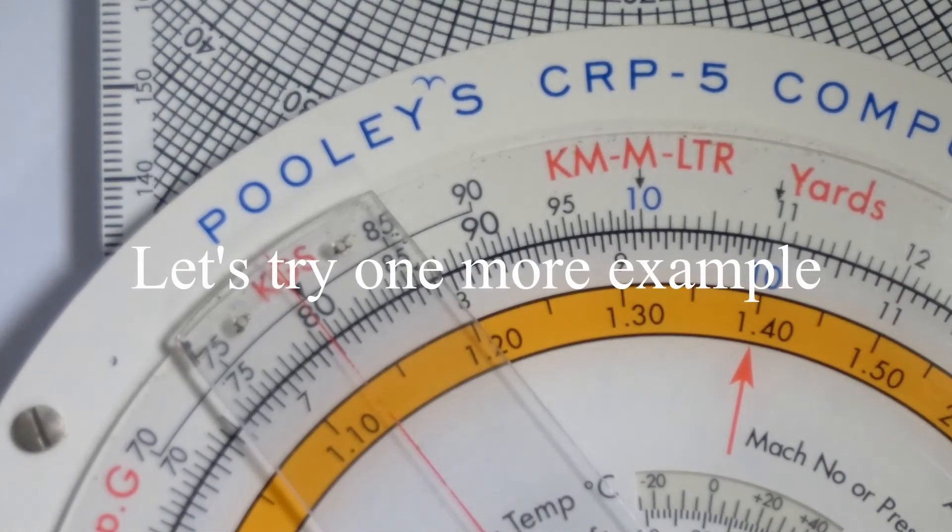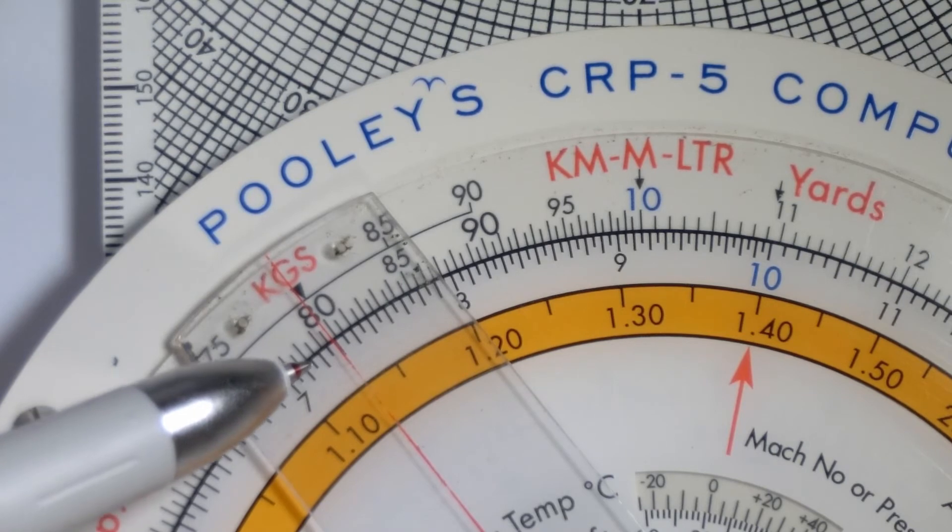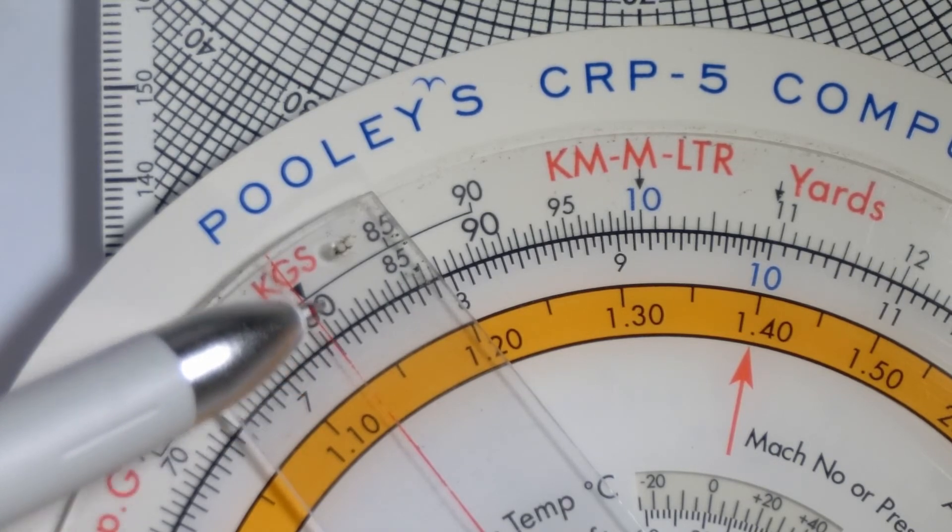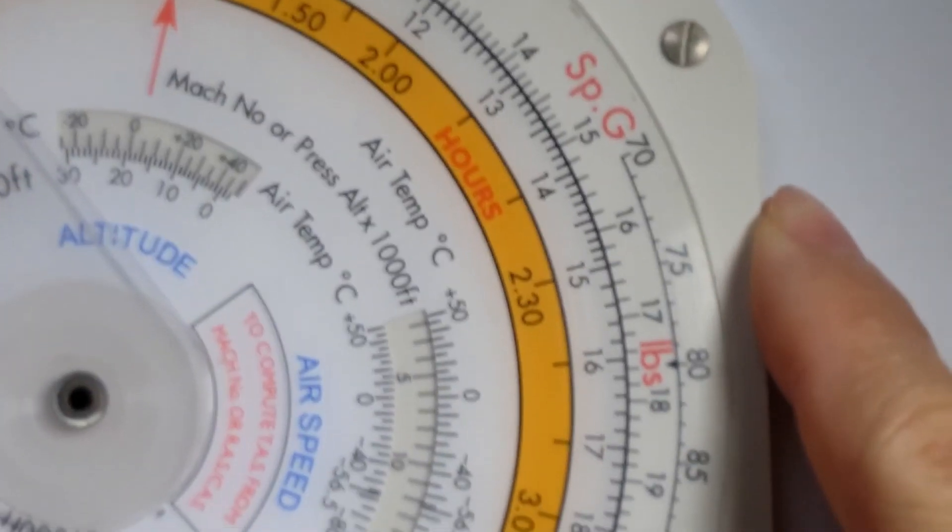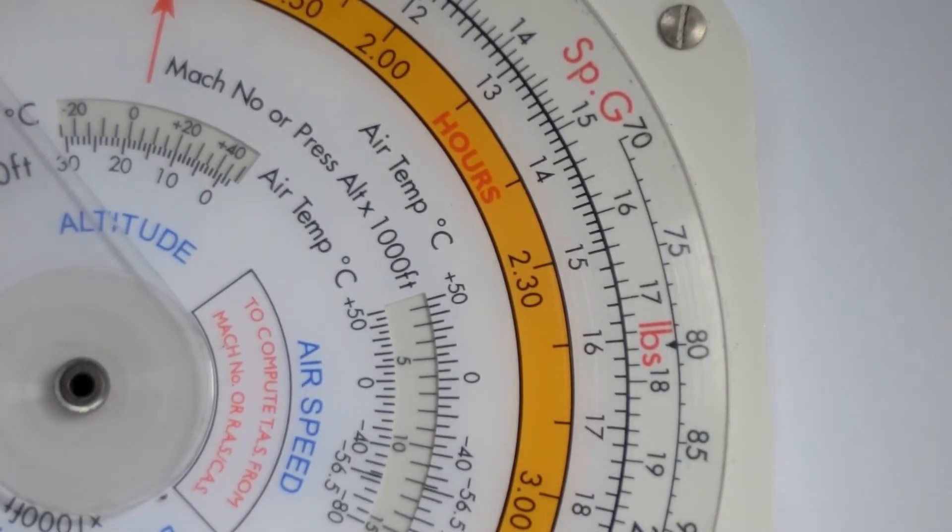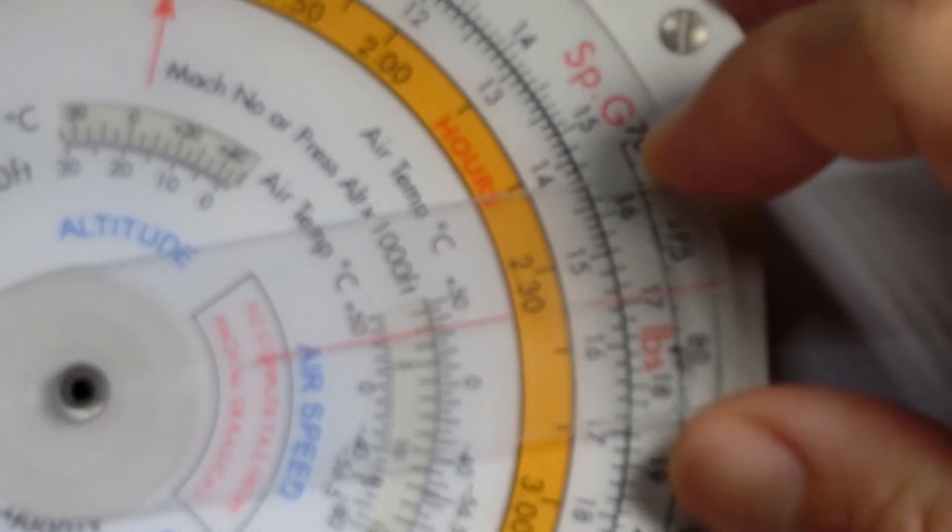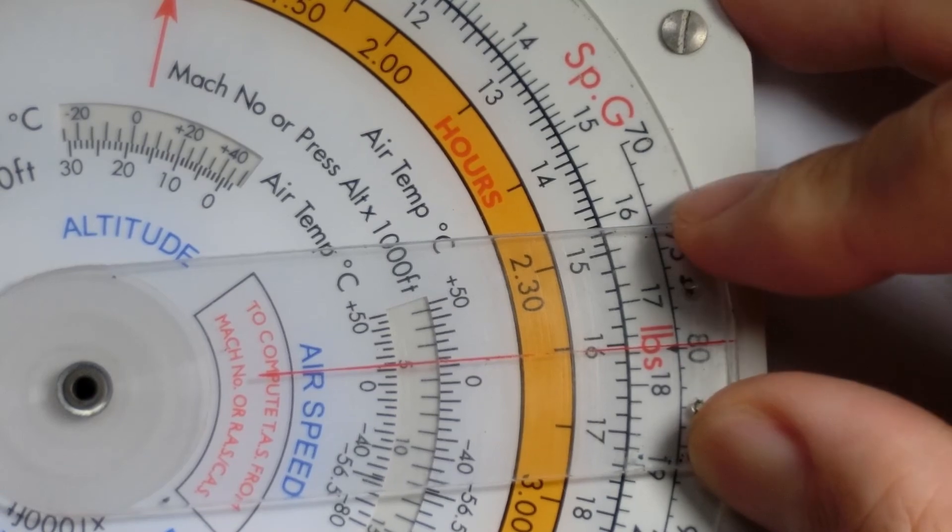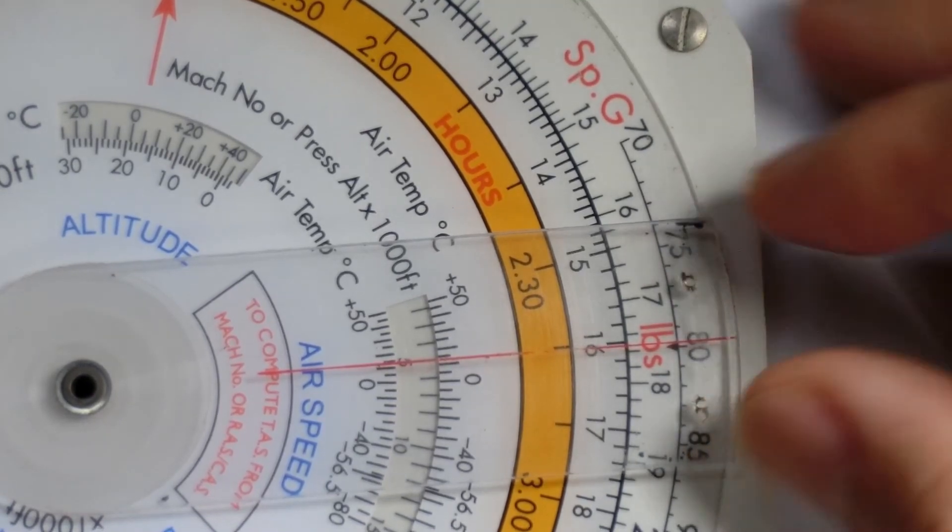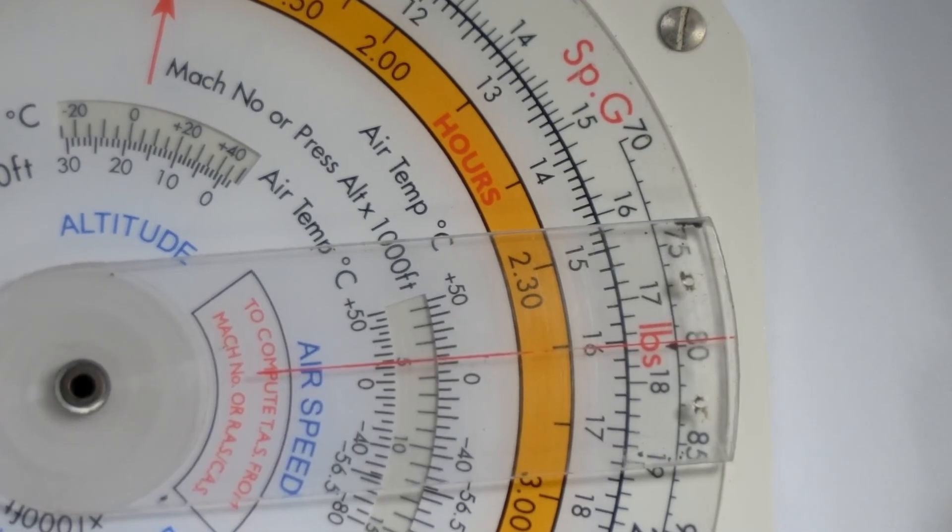Let's try another one. Let's try 73 kilograms. So we've got 71, 2, 3. So, 73 kilograms. And we go to the other side, where I have my pounds. I'm going to shift my cursor here. That gives me about 160 pounds. And that's all there is to it.